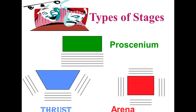Hi, this is Gary, and today's mini-lecture, as you can see from the screen, is called Types of Stages. Today we're going to take a look at three different kinds of stages: the proscenium stage, the thrust stage, and the arena stage.